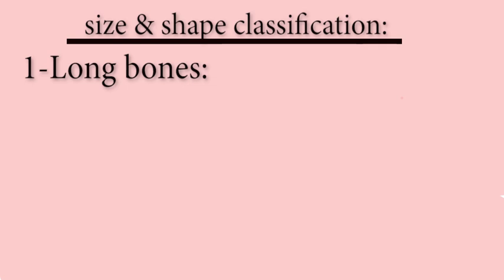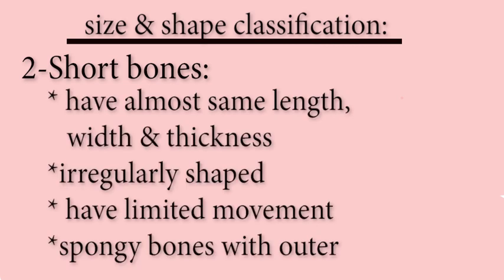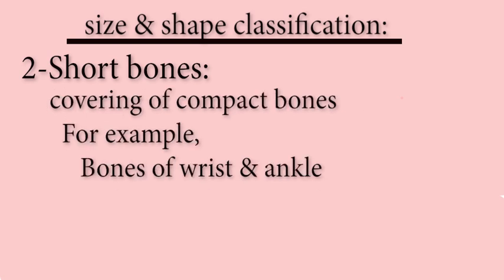Next come short bones. These bones have almost the same length, width, and thickness, and are irregularly shaped. They have limited movement. Short bones are spongy bones with an outer covering of compact bone. For example, bones of the wrist and ankle.